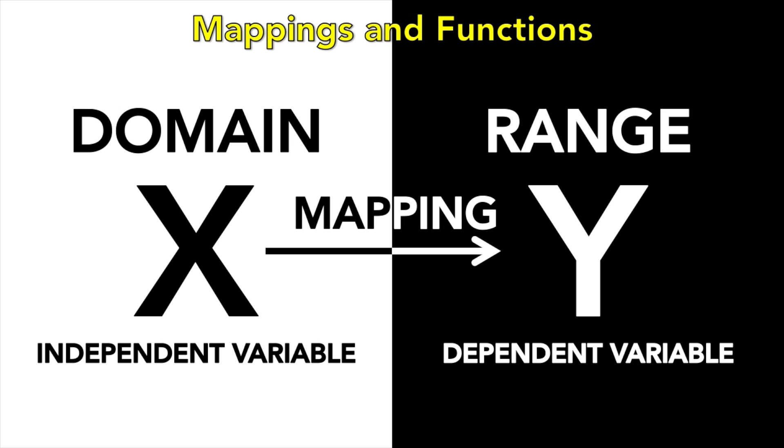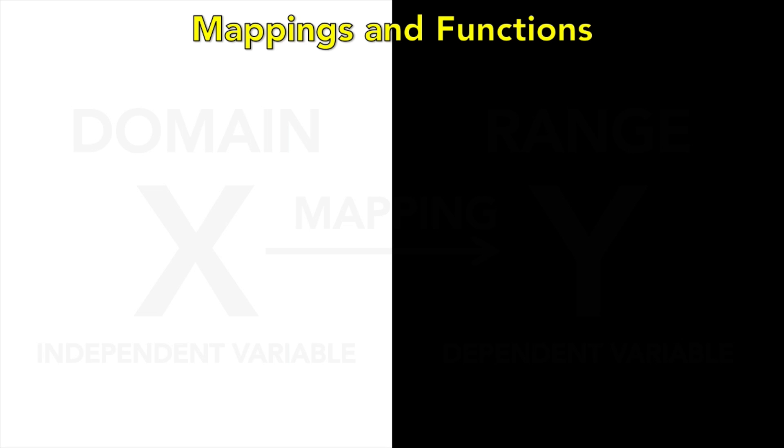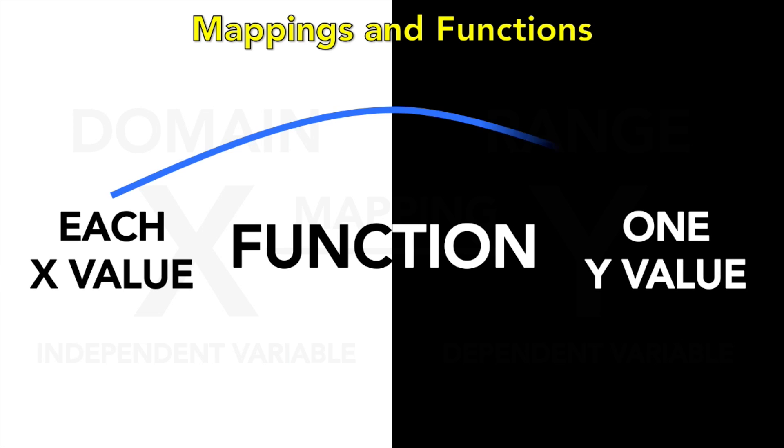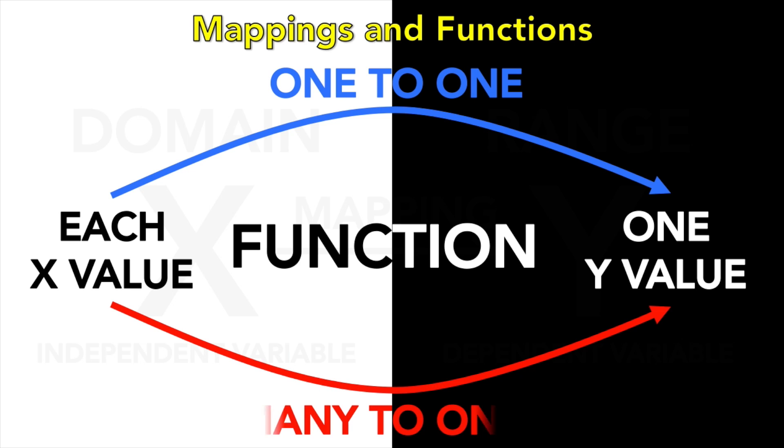But every function is mapping, but not every mapping is a function. A function can be one to one or many to one. So if you're geometrically minded, linear or quadratic, etc. But what isn't a function is a one to many mapping, like a sideways quadratic. Or a many to many mapping, like a circle.